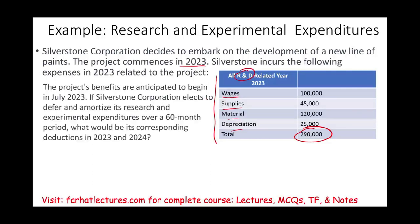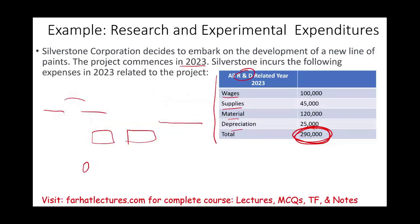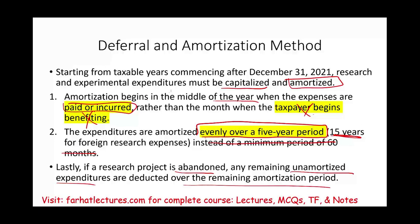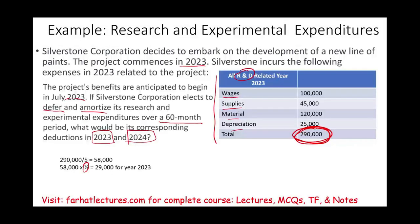The project's benefits are anticipated to begin July 2023. If the company elects to defer and amortize — which is the current requirement since immediate expensing is no longer available — and the research is amortized over 60 months, what would be the corresponding deduction in 2023 and 2024? The rules: $290,000 divided over five years equals $58,000 per year. For year one, you multiply by one-half, assuming the mid-year convention — amortization begins in the middle of the year when expenses are paid or incurred. For 2024, you get a full year, which is $58,000.